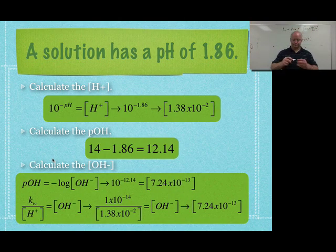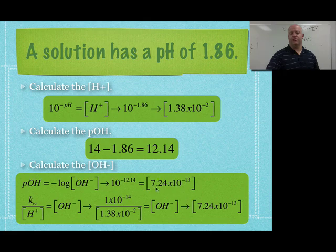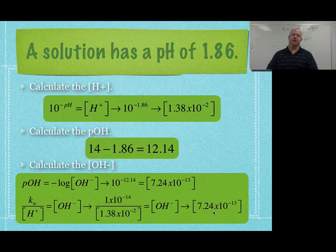And if we put that in, here's your two possibilities. So negative log of OH minus, 10 to the negative 14.14 gives you 7.24 times 10 to the negative 13th. If you do the KW equation, again, 7.24 times 10 to the negative 13th. Gives you both of those things.